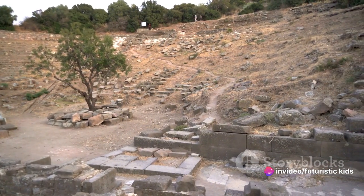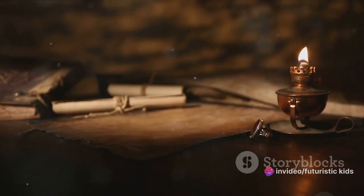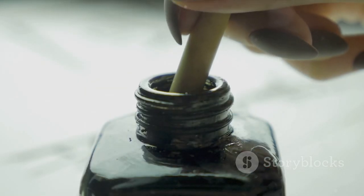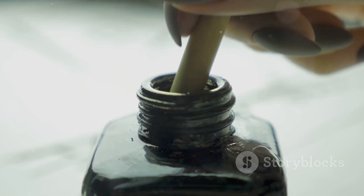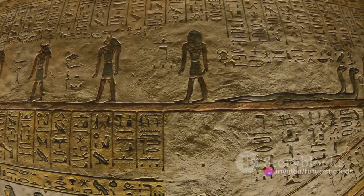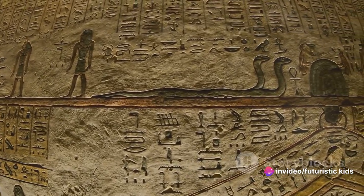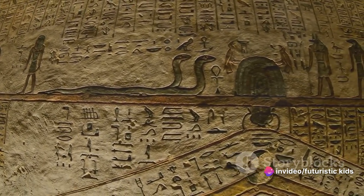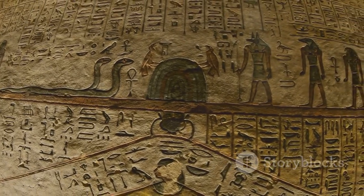Technological advancements were another crucial aspect of these societies. Ancient China's invention of paper and gunpowder, for example, revolutionized communication and warfare, shaping the course of human history. Similarly, the ancient Egyptians' development of hieroglyphics laid the groundwork for written language.